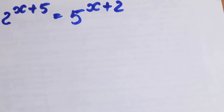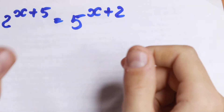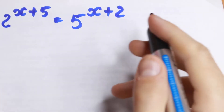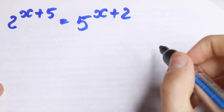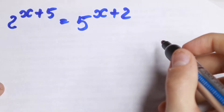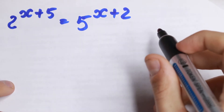Hello everyone, welcome back to Math Mode. Today we have an interesting exponential equation: 2 to the power x plus 5, equal to 5 to the power x plus 2. How can you solve this equation?